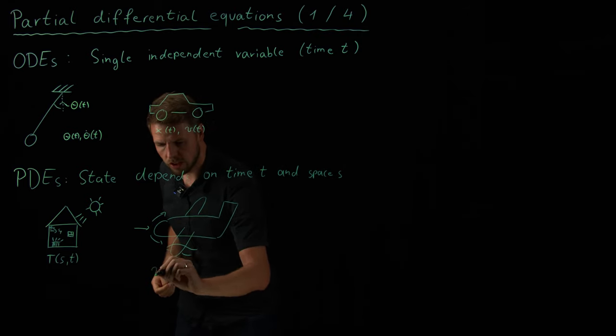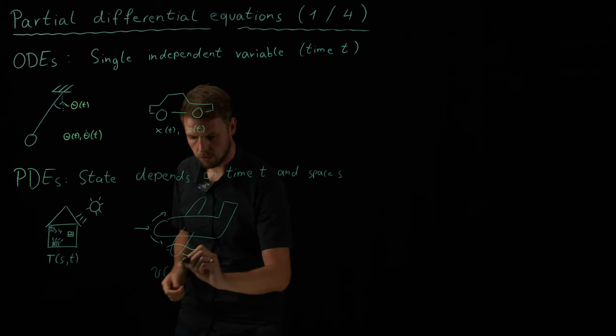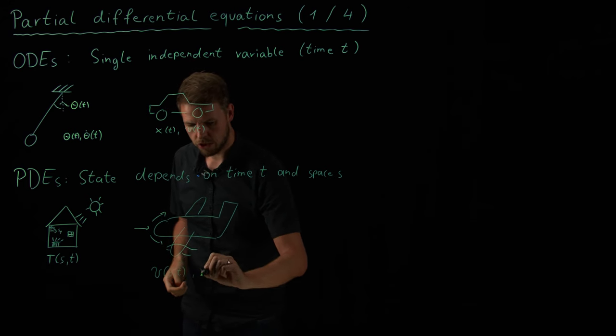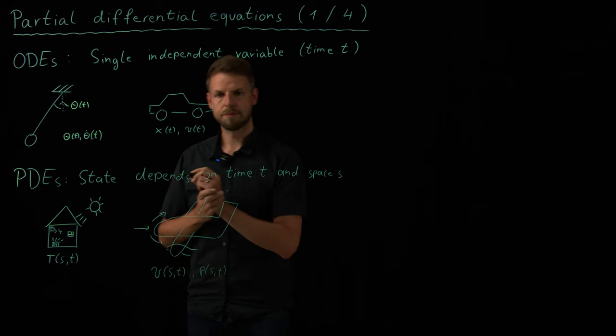You have the air velocity V, which is different in places and also in the time. So velocity as a function of space and time. And also the air pressure P can be a function of space and time.